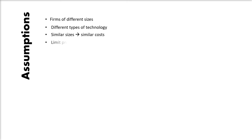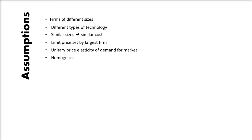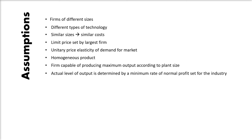All firms of a given size have similar costs. The limit price is set by the largest firm, which is the price leader. This price is acceptable to firms of all sizes. The leader firm knows the cost structure of firms of the three plant sizes and also the market demand. The price elasticity of demand is unitary for the market. All firms produce a homogeneous product. Each firm is capable of producing the maximum output in accordance with its plant size. The actual level of output is determined by a minimum rate of normal profit set for the industry.